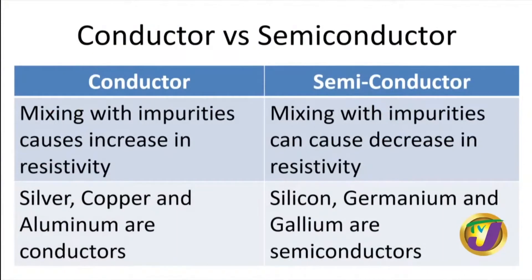Now, if you mix conductors with impurities, it causes an increase in the resistivity. For instance, if you have a pure material like aluminum and you make an alloy, that alloy will not have the same resistivity — it will have a higher resistivity than the pure aluminum itself. However, on the other side, mixing semiconductors with impurities can cause a decrease in the resistivity. That means the semiconductor will become more conducting — a better conductor. This property of semiconductors is used in making them more conducting so that you can use them for all the processes they are needed for.